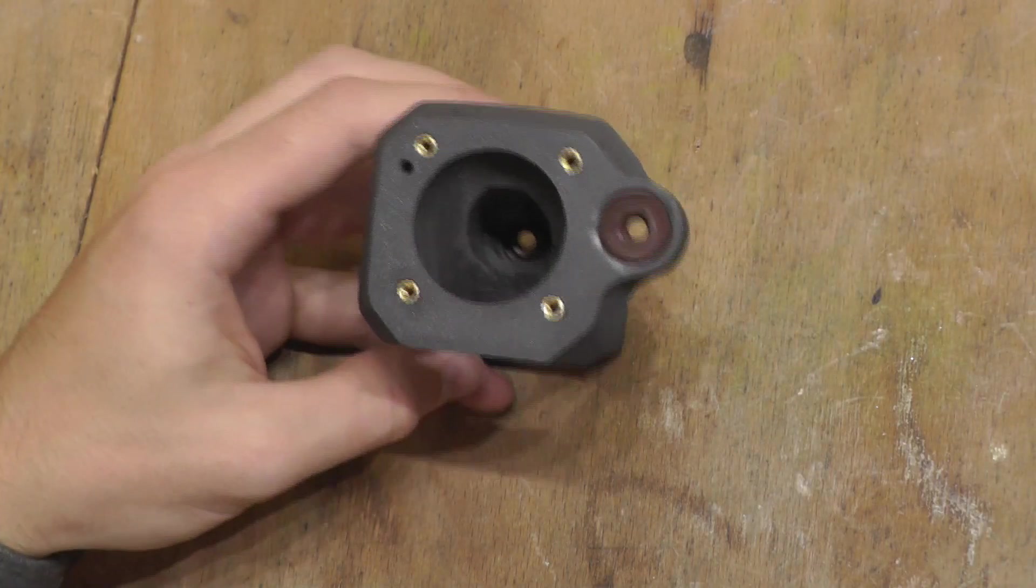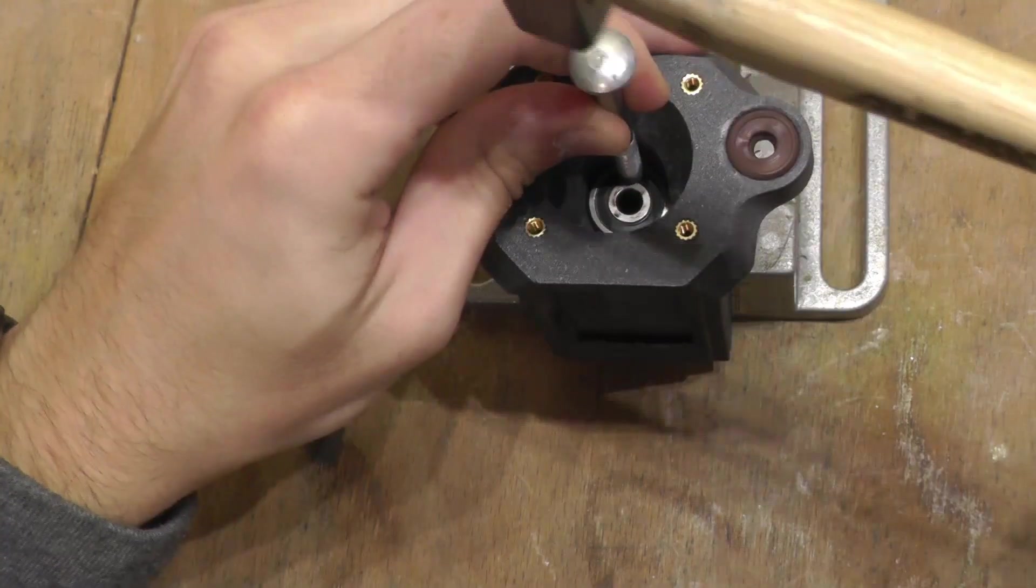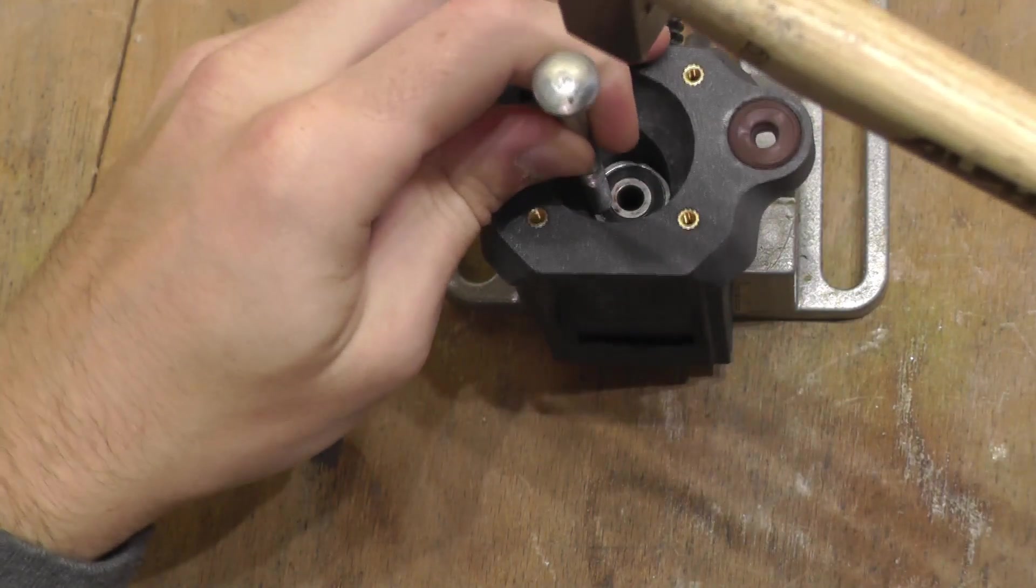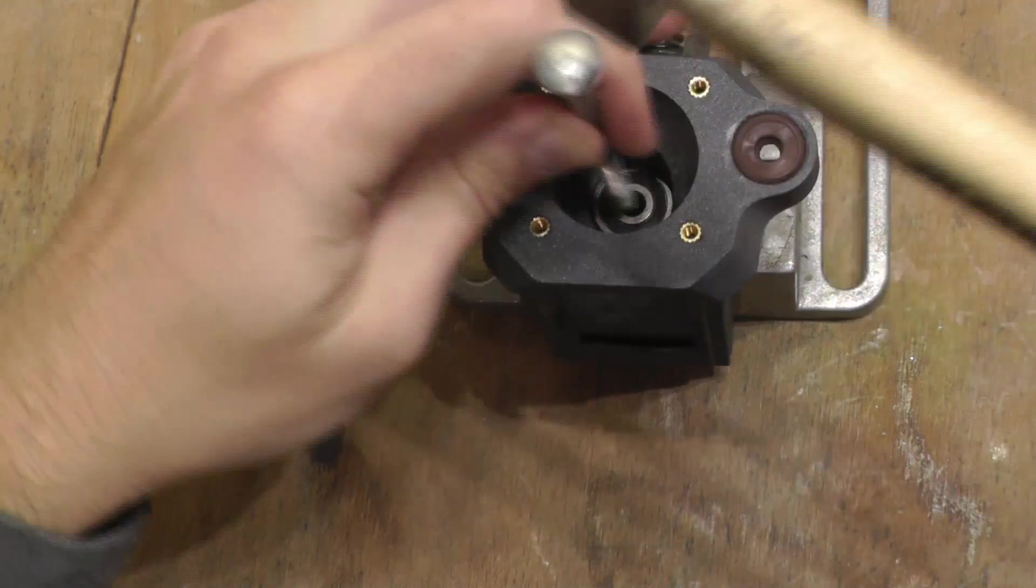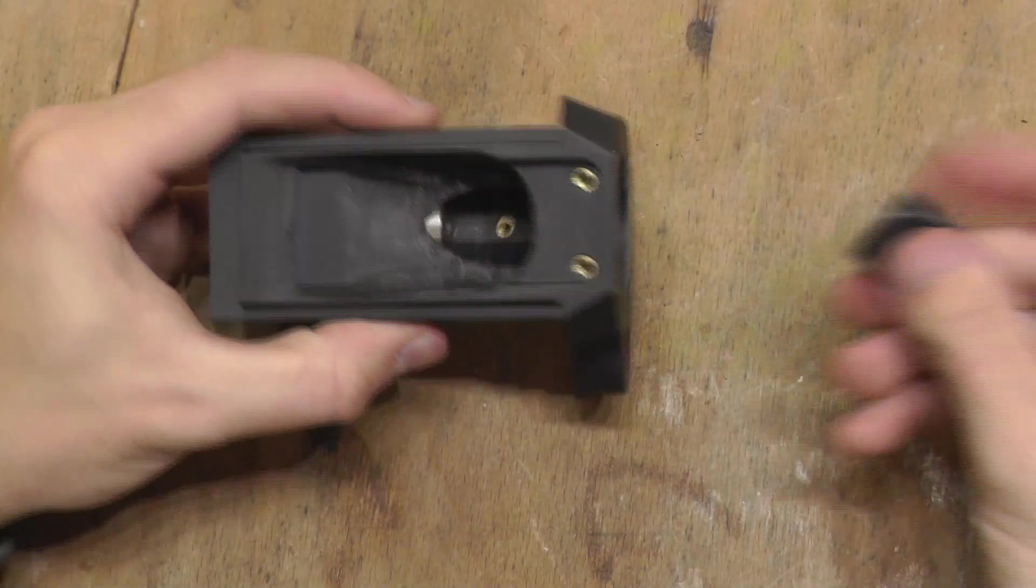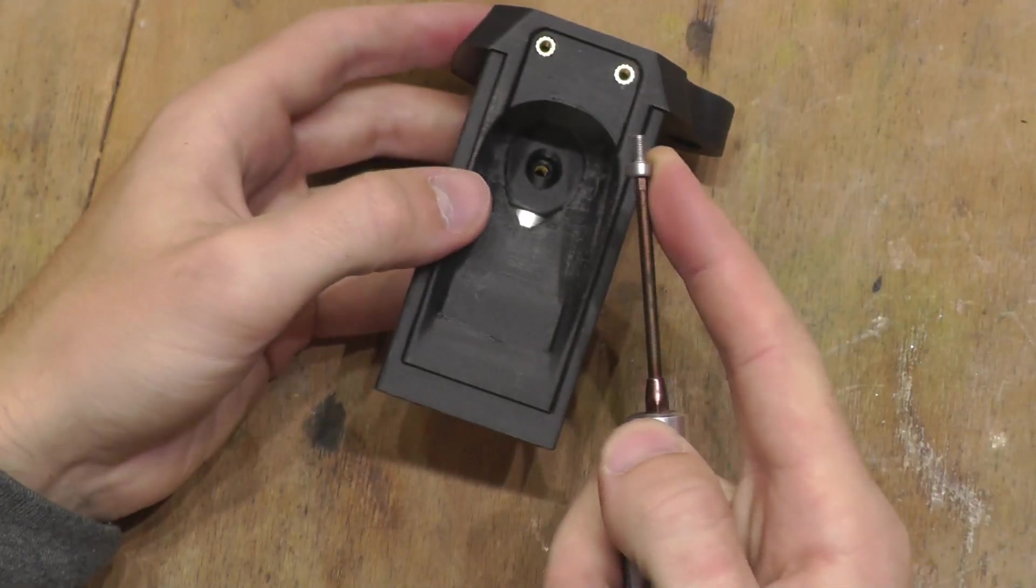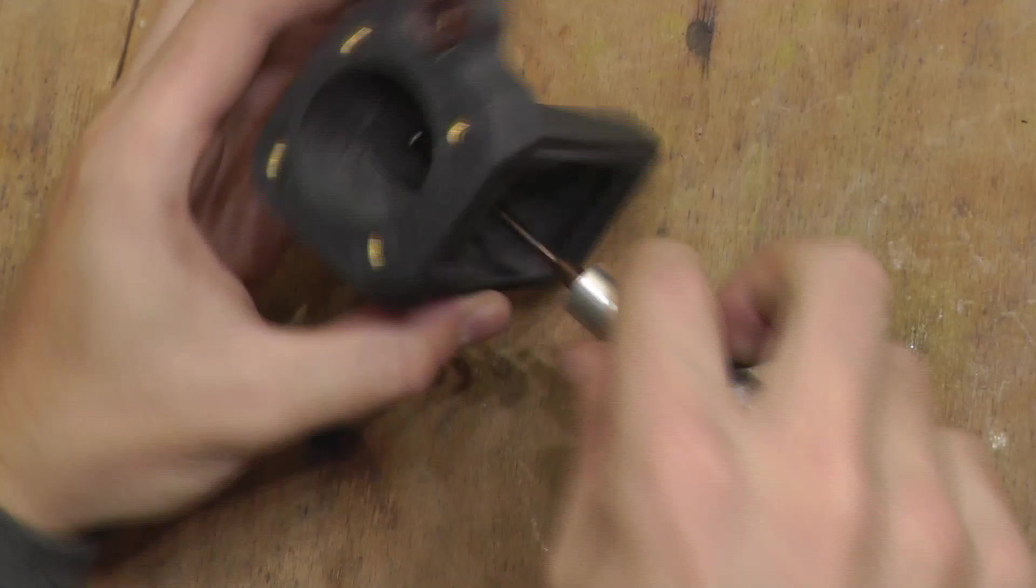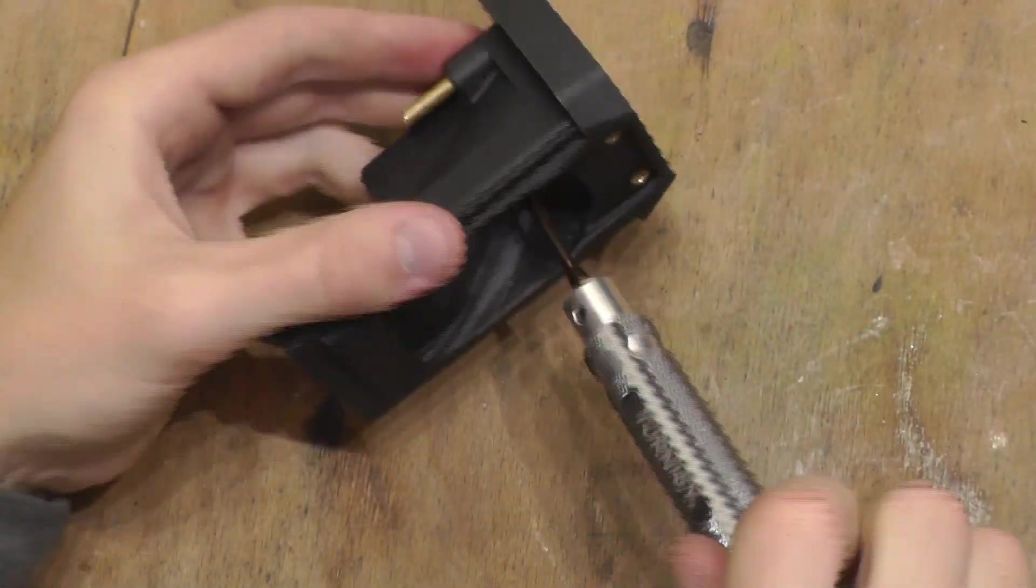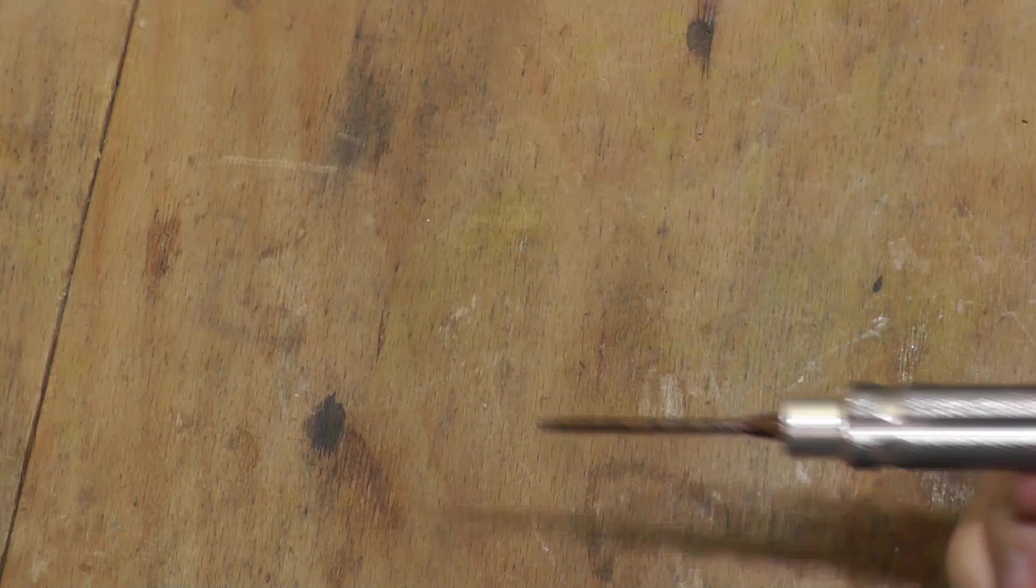Okay, so we have our seals ready and now the main bearing, which goes right here. And now secure it with the bearing cap. And use M3x6 to fix this. Alright, and this is our housing preassembled. Now let's move on.